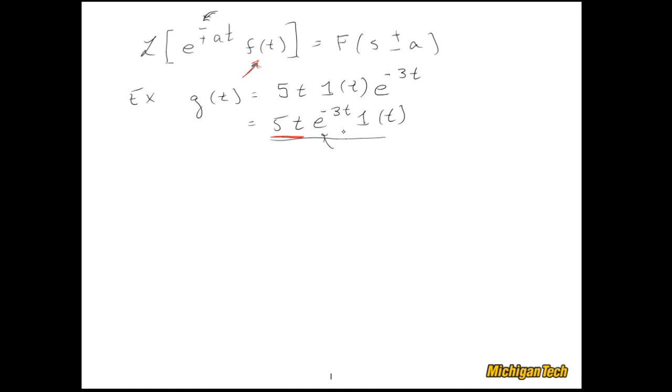So let's go ahead and do it. G(s), well actually let me just start like this. I'll say the Laplace transform of 5 times t, and I'll keep the unit step in there, is equal to 5 over s squared. And now to get G(s), I'll just replace every occurrence of s with s plus 3. Boom, it's done.